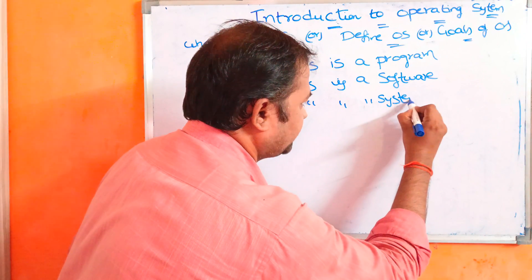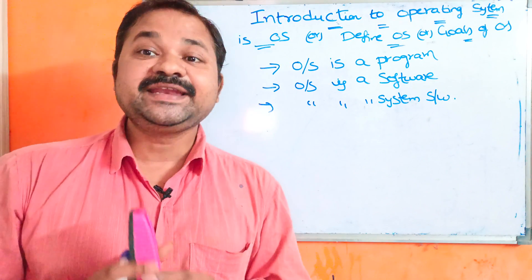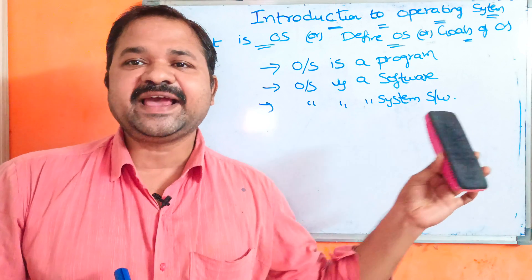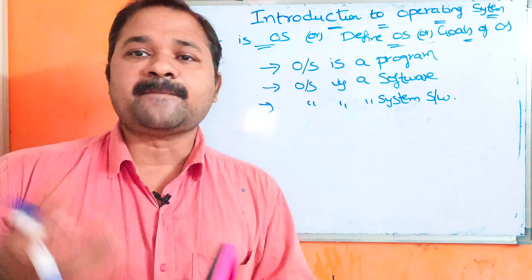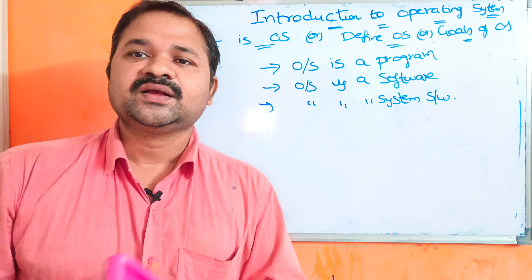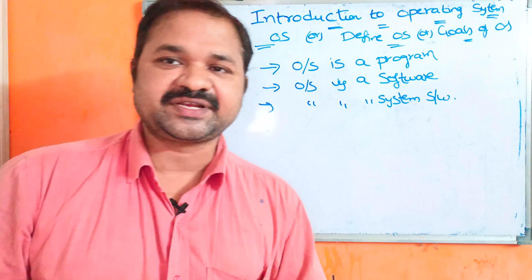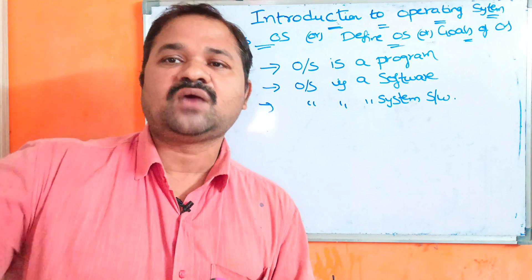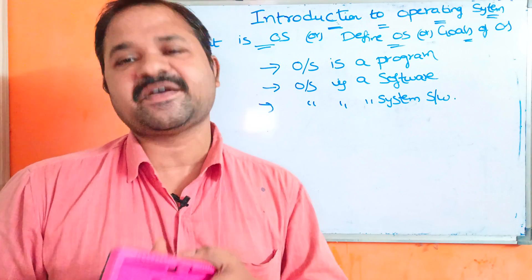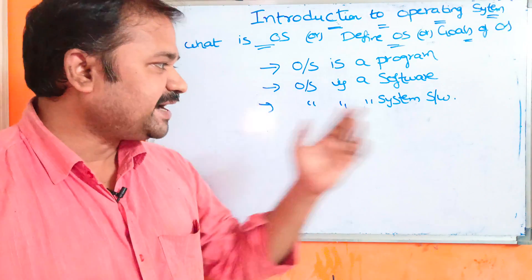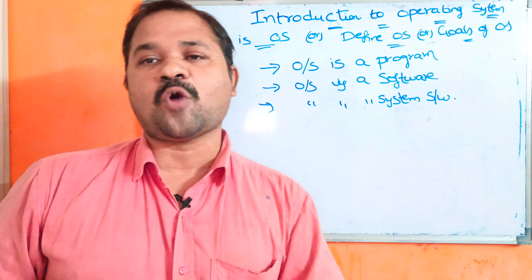So what is system software? We can use the computer in an effective manner with the help of system software. The operating system is a system software. A compiler is a system software. An assembler is a system software. Text editors such as Notepad and WordPad are also system softwares — we can utilize the computer in an effective manner with them.